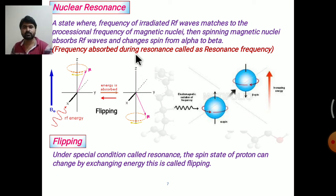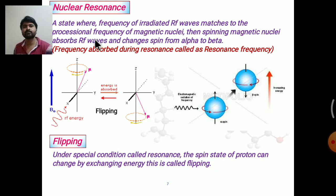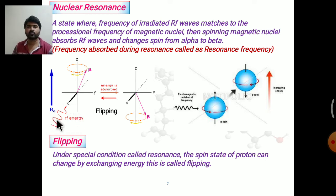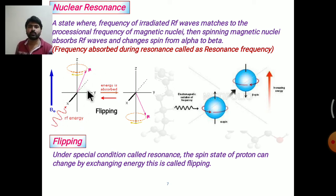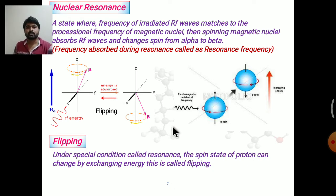Nuclear resonance is the state where the frequency of the irradiated radio frequency wave matches the precessional frequency of the magnetic nucleus. The spinning magnetic nucleus then absorbs energy from the radio frequency wave and changes its spin from the alpha state to the beta state — this is called nuclear resonance. The frequency absorbed during resonance is called the resonance frequency, and at this point a signal or line appears in the spectrum.